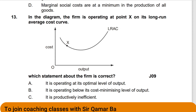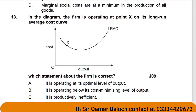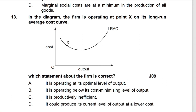Question 13 — read the question carefully, stop the video and try to find the answer. In the diagram, the firm is operating at point X on its long-run average cost curve. Point X is shown on the curve, where average cost and output can be read from the diagram.